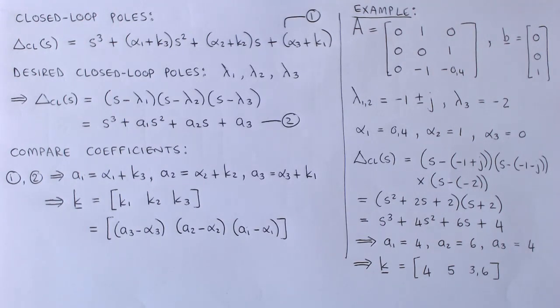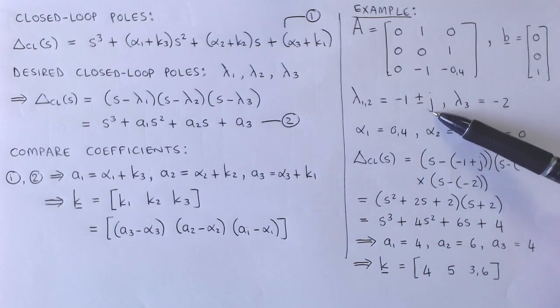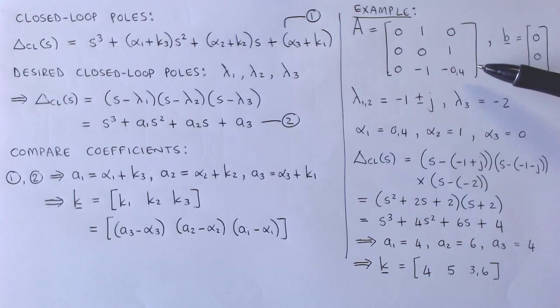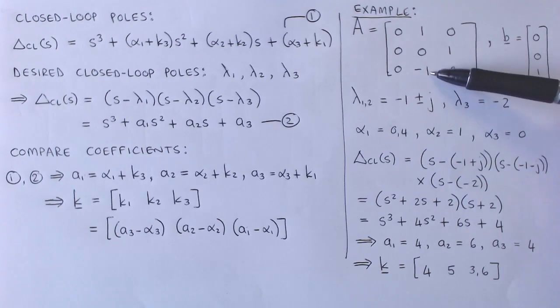Let's work through an example to illustrate the concepts. Suppose a third-order state variable model has this matrix and this B vector. The goal of this example is to design a regulator with closed-loop poles at minus 1 plus minus J and at minus 2.